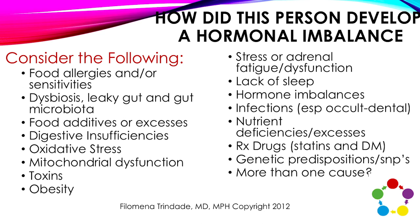Anytime you think of a hormonal imbalance, consider how did this person develop it. At the top of the list, consider food allergies, food sensitivities, reactions to what we are ingesting, dysbiosis, change in the gut microbiota, leaky gut, and what was added to our food — additives or excesses. Also consider digestive insufficiencies — problems not just with stomach acid, pancreatic function, but also in the biliary tree. Then consider oxidative stress and mitochondrial dysfunction, because there may be another underlying cause. Connect the dots between what the patient complained about, your history, and physical exam.